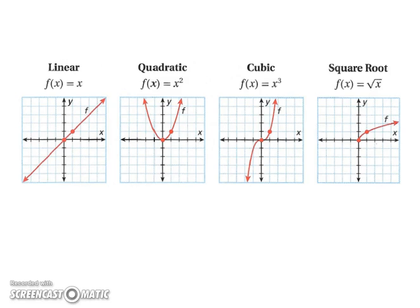Alright, so recap. Linear. So your linear function is going to be at (0,0), (1,1), (2,2), (3,3). So that's your parent function for your linear. For your quadratic, you're going to have a point at (0,0), (1,1), and then (2,4).